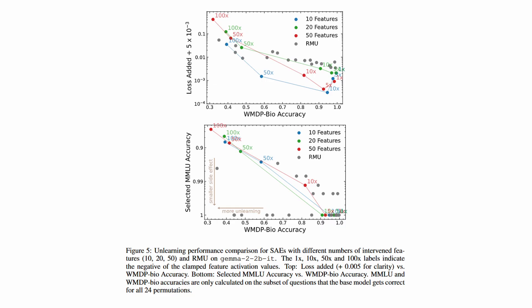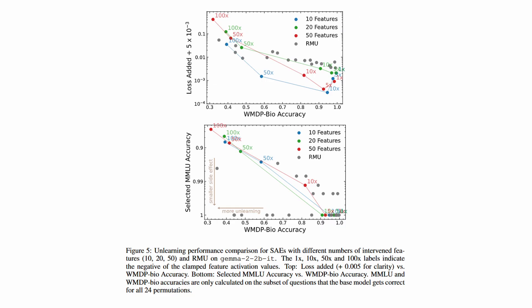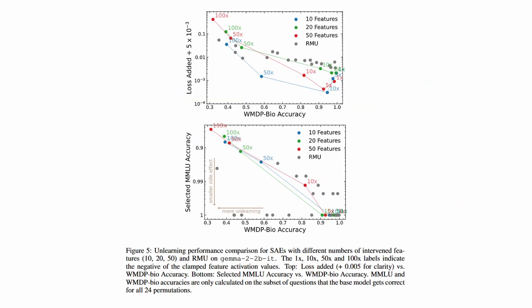What about if we intervene on multiple features? The authors create some really cool charts to investigate this. Our ideal result is a point as close to the bottom left corner as possible, representing small side effects either in terms of loss added or performance on a general-knowledge benchmark called MMLU, as well as high unlearning on the benchmark testing the stuff we want to unlearn, called WMDP-Bio. The different colored lines represent different values of N for selecting the top N features to clamp, and the gray dots represent a baseline measuring the performance of a fine-tuning method called RMU. There are multiple gray dots because different hyperparameters were tested for RMU.